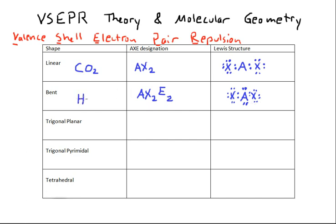One example molecule that has a bent geometry is water, which does have an AX2E2 geometry or designation.